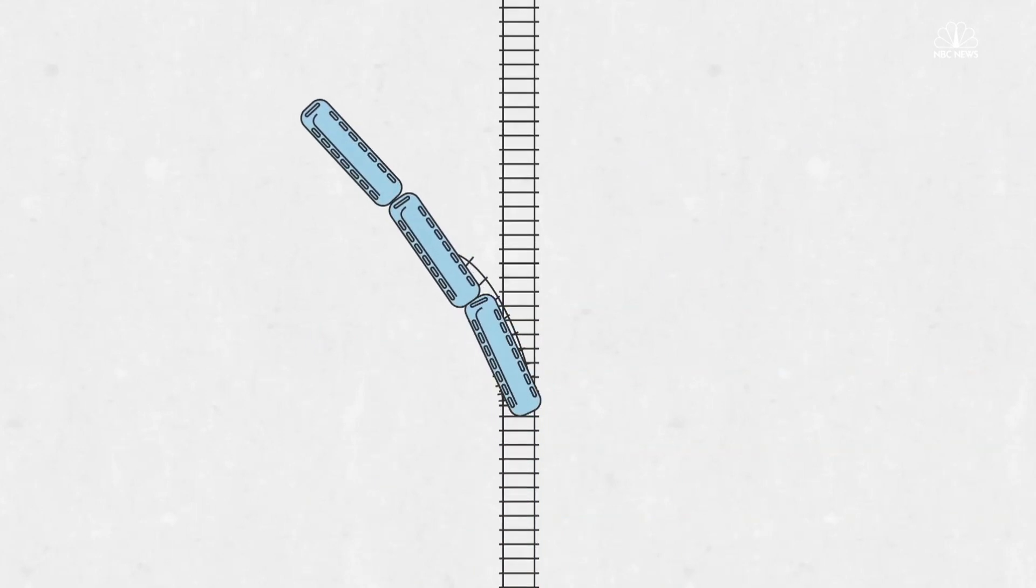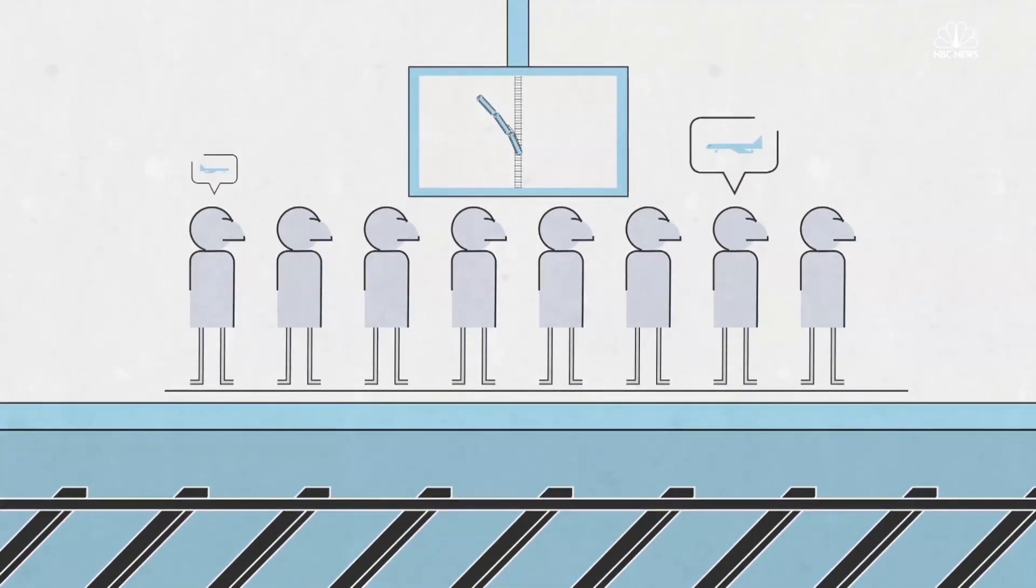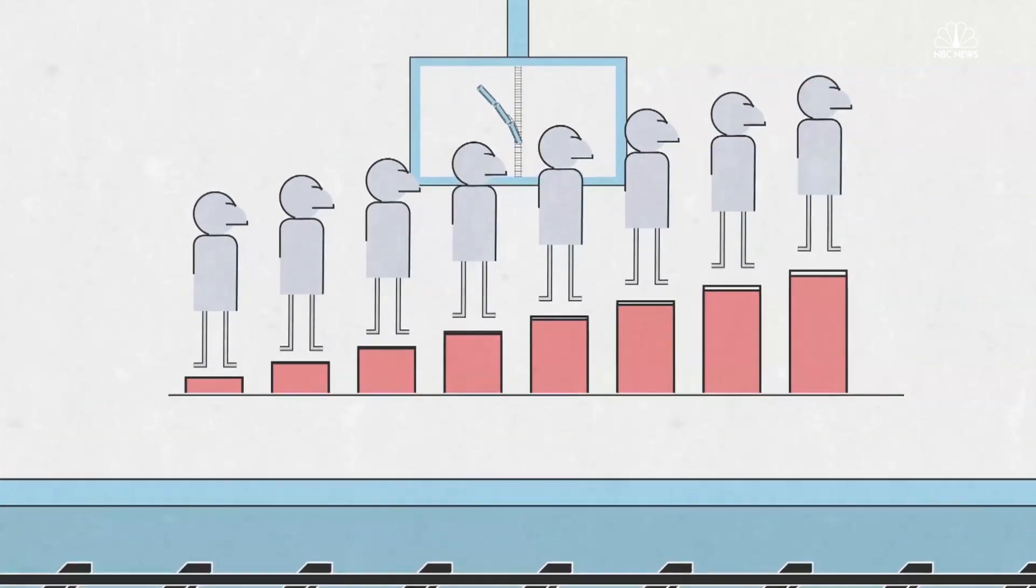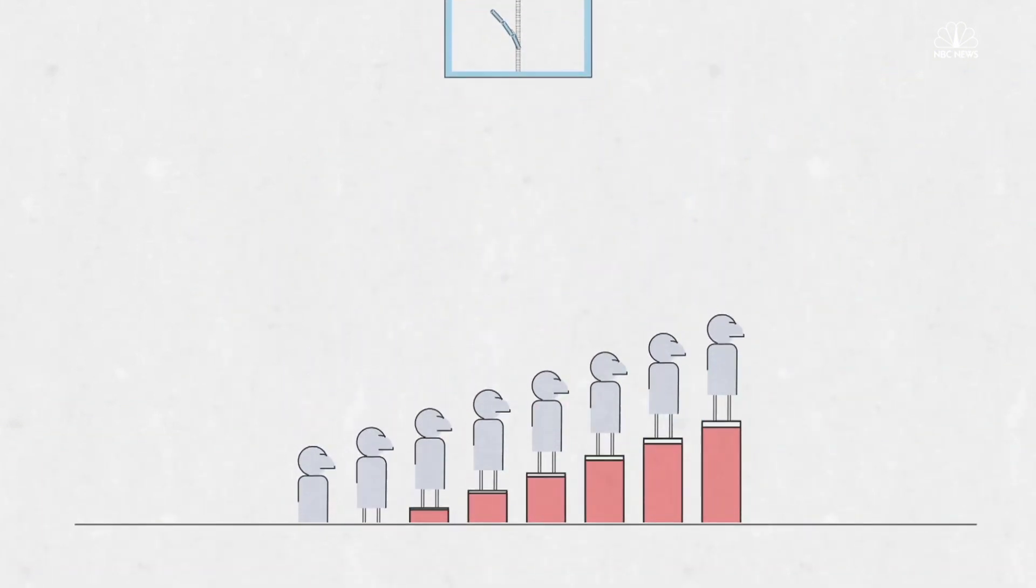If, say, a train derailment shuts down a major section of rail and thousands of stranded passengers suddenly book flights, the prices will surge in accordance with that sudden demand.